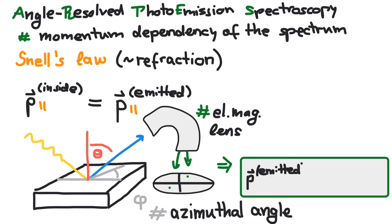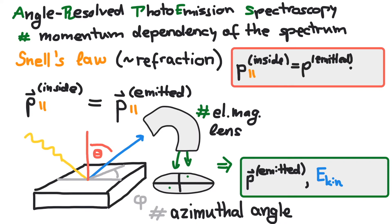Electromagnetic lenses help to measure the momentum of the emitted electron and naturally the kinetic energy. Subsequently, the component parallel to the surface is extracted by multiplying with the sine of theta. This is the actual physical absolute value of the momentum inside the material which is parallel to the surface.